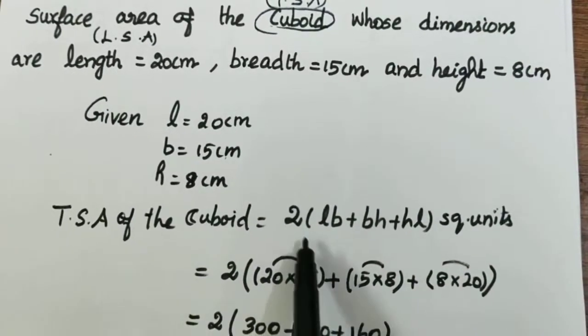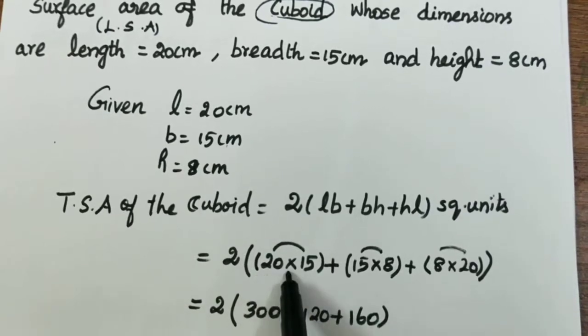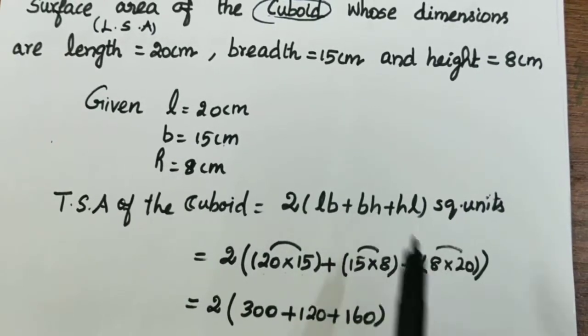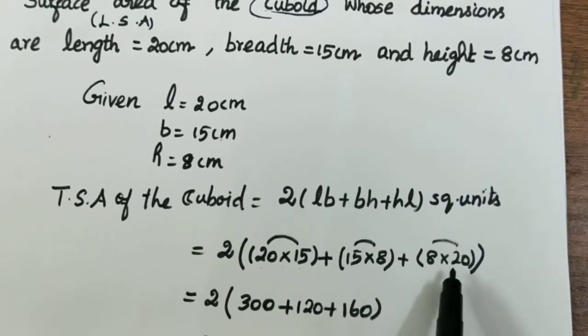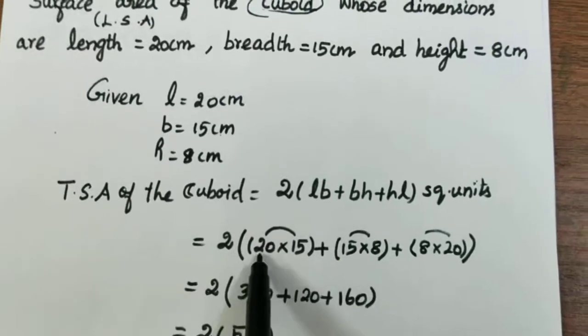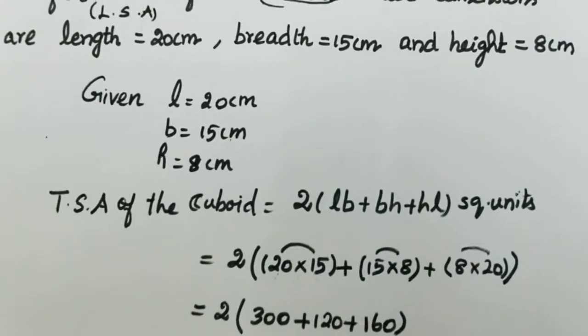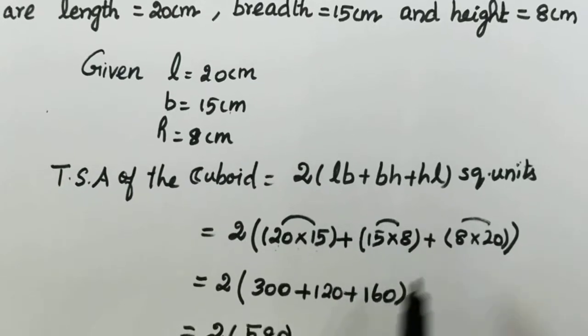First, 2 into bracket start, lb, so length into breadth, 20 into 15, plus bh, 15 into 8, plus hl, 8 into 20. Next step, multiplication: 2 into this. Multiply: 300